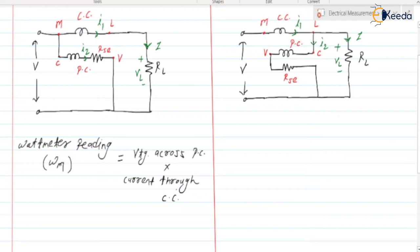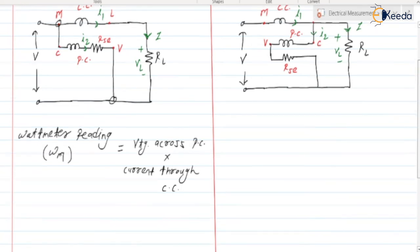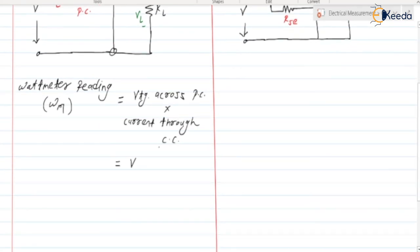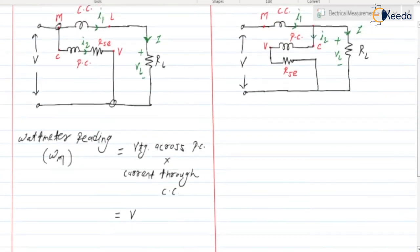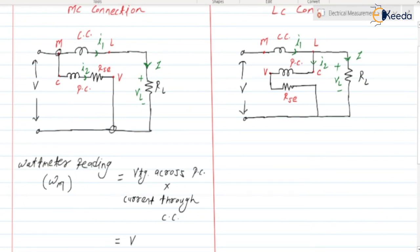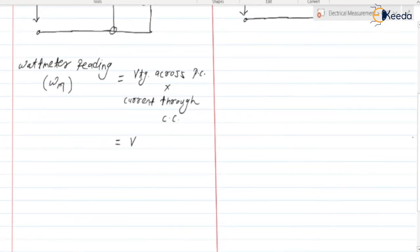For the MC connection, the potential coil is connected between these two terminals, and the voltage across it is the same as the supply voltage V. The current through the current coil, I1, equals the load current I since these two are connected in series. So we can write I1 = I, and therefore the wattmeter reading Wm = V × I.